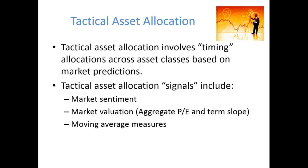Tactical asset allocation involves timing the market in order to shift the asset allocation across asset classes. For example, this would involve making predictions about the future performance of the economy and financial markets. If the investor thought things were quite prosperous for the future, they would dynamically allocate a larger proportion of their wealth toward higher risk asset classes such as equities. Whereas if there was a forecast that the economy and financial markets were going to perform poorly, they would dynamically allocate away from risky assets and into very low risk or risk-free asset classes.